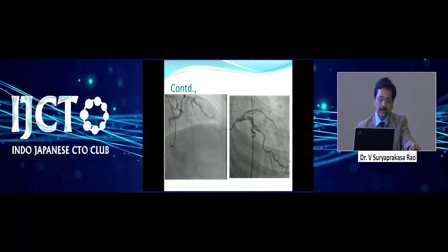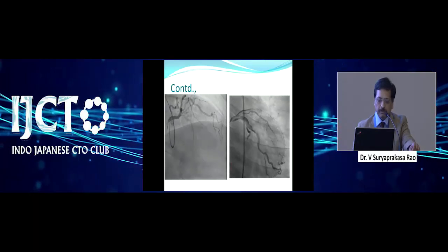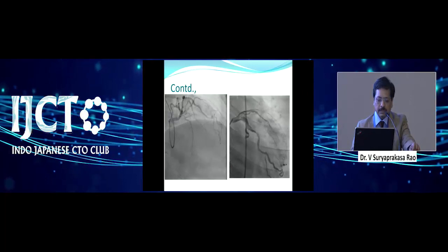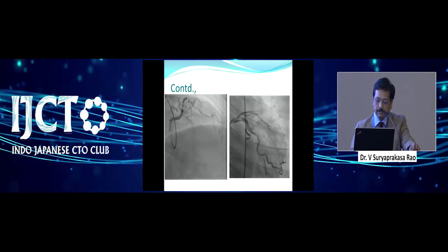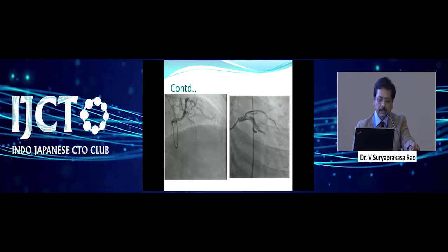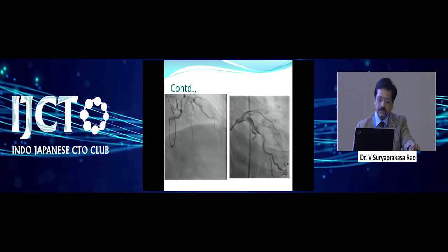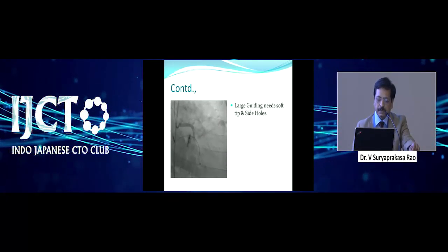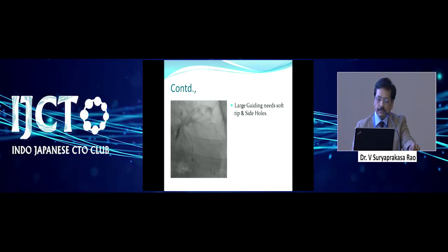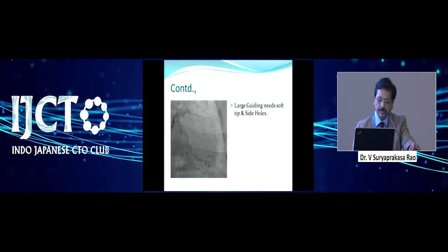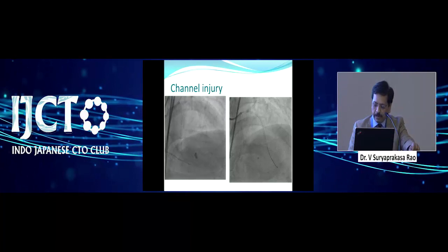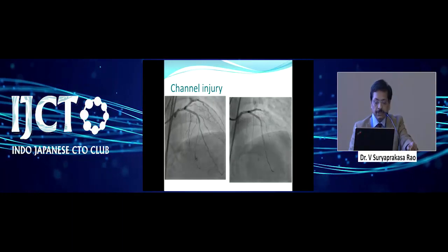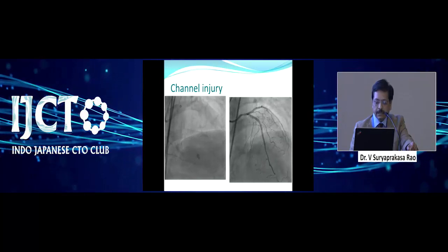The most important thing is left main injury — whenever using the Amplatz guiding catheters or extra backup catheters with a hard tip, the choice of guiding catheter is very important because it is disastrous either at the beginning or end of the procedure. This is one case with an RCA CTO where there was a dissection — ultimately had to do a crash technique and left main stenting. Fortunately, because the wire was already crossed into the LAD, I could put the stent and do left main stenting.